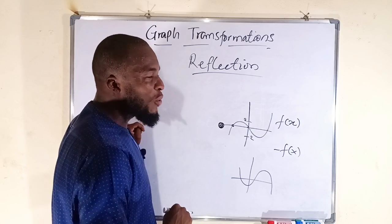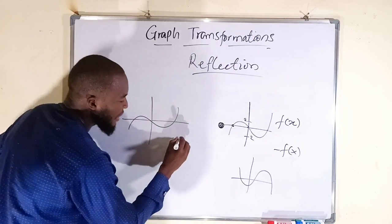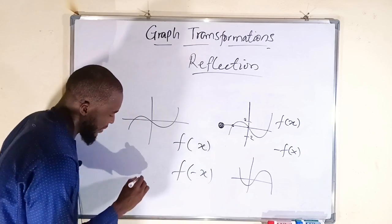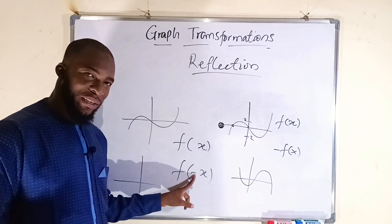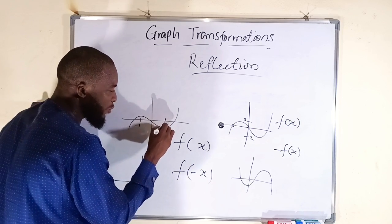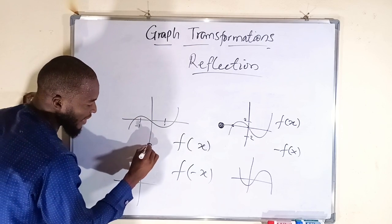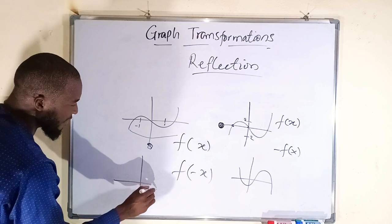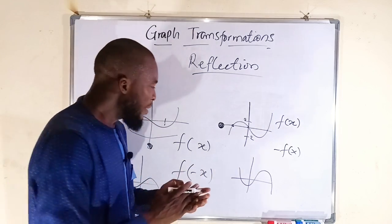Now for reflection about the y-axis: f(−x) reflects the graph about the y-axis. This is an effect on x, so every x-coordinate is multiplied by −1. For example, if a point is at x = −1, multiplying by −1 gives x = 1, so that part of the graph moves to the other side. The two legs of the graph swap sides, producing a mirror image about the y-axis.